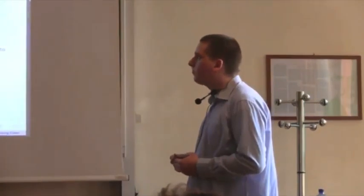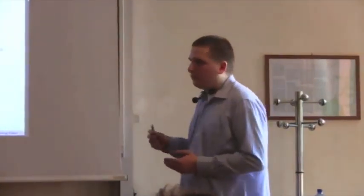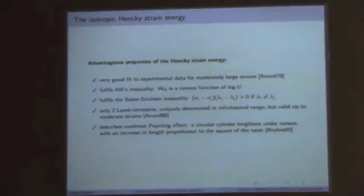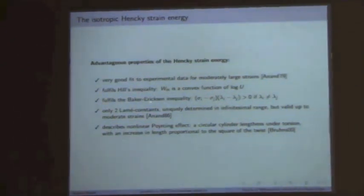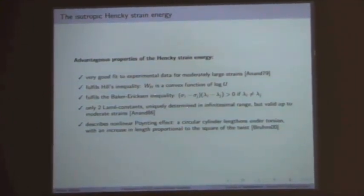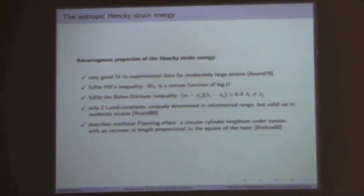For larger deformations, the Hencky energy is not a very good fit. It fulfills some constitutive inequalities, for example the Higgs inequality and the Baker-Eriksen inequality. It uses only two constants, the same as in the linear case, so it is straightforward to obtain material parameters by measuring small deformations and the appearing stresses. You then have the whole constitutive model for the material, which is a good fit for even moderately larger deformations.